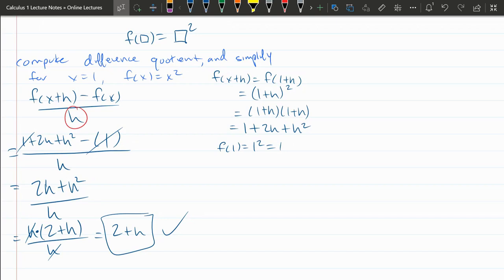If I was computing instantaneous rate of change here, you will very soon in a few of these problems, you're going to think about what happens when h gets very small. So if h gets very small, 2 plus a very small number gets close to 2.